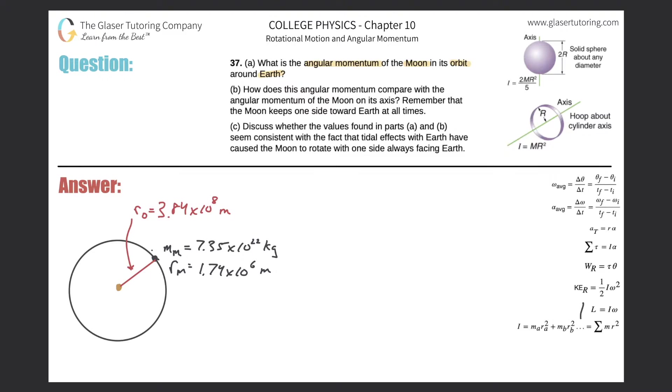Therefore, we need a formula for angular momentum. Angular momentum is denoted by the symbol L, and I'm going to write that over here. Angular momentum is then equal to the moment of inertia of the system multiplied by the angular velocity.